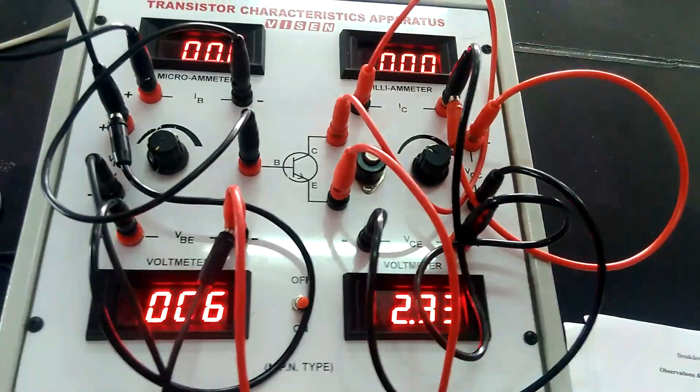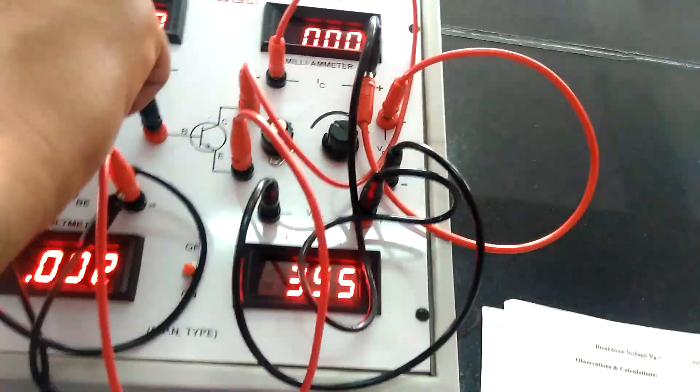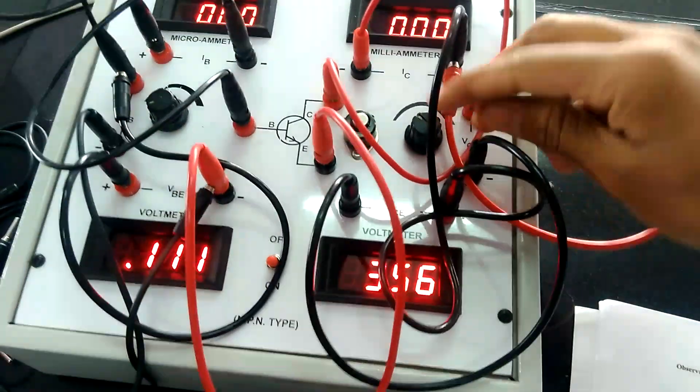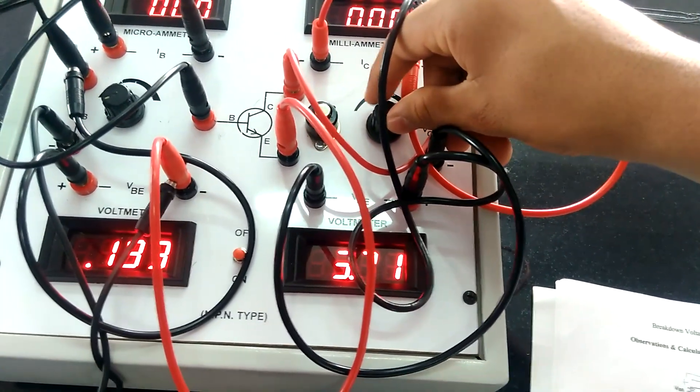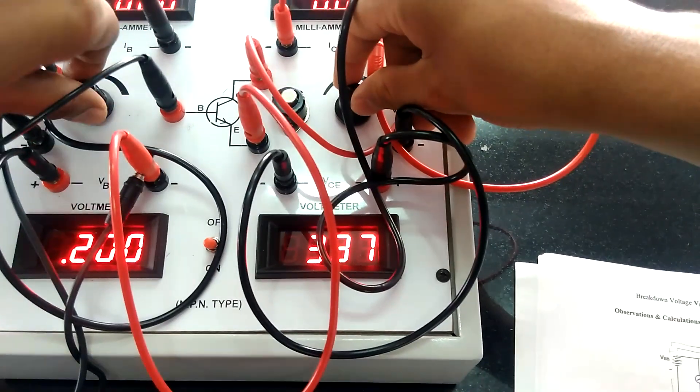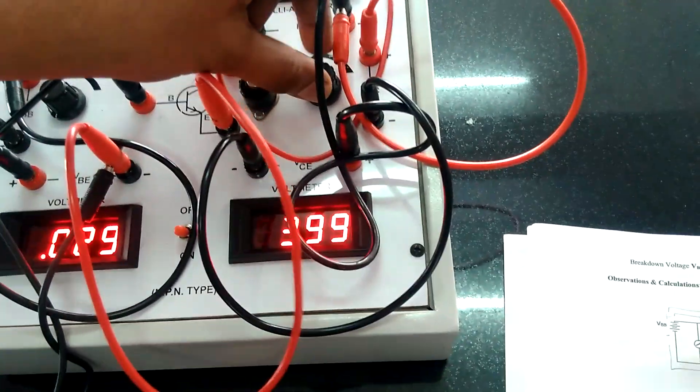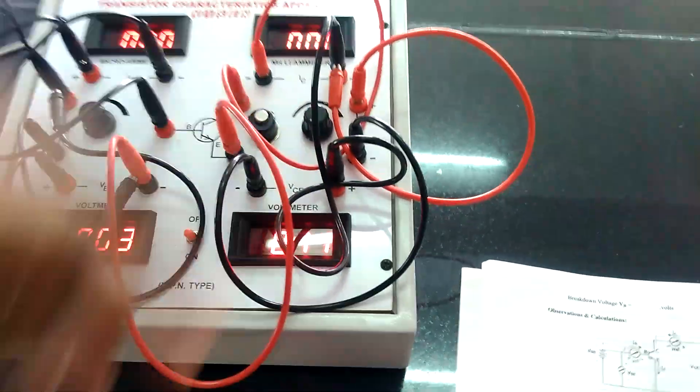Now in one second do 0.1, 0.2 up to 0.8, till 4. This should be at 4 constant, 4 constant, okay. Now make it 0, okay.